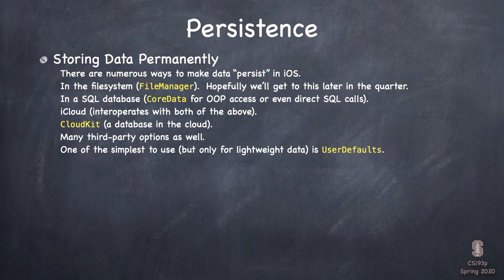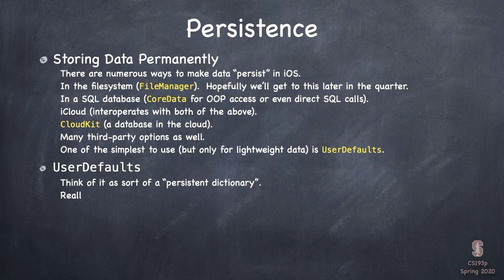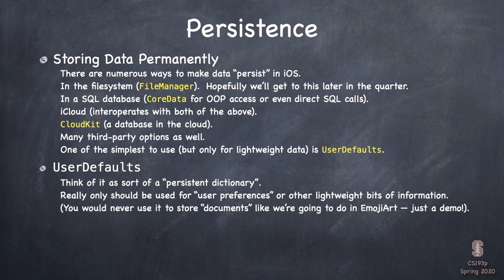One of the simplest ways to store things is using something called UserDefaults. You can think of it as a persistent dictionary — it feels a lot like a dictionary that just sticks on disk. But it really should only be used for user preferences, small little things. You don't want to use it to, for example, store your documents, which is what we're going to do in our demo.